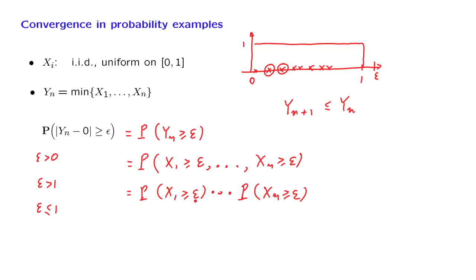The probability that X1 is larger than or equal to epsilon can be found as follows. If we have here epsilon, the probability of being larger than or equal to epsilon is the probability of this event here. So it's the area of this rectangle. The base of that rectangle is 1 minus epsilon.